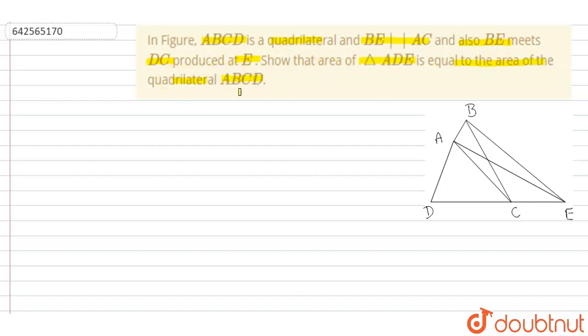So here question says in a figure ABCD is a quadrilateral, BE is parallel to AC and also BE meets DC produced at E. What we have to show is that area of triangle ADE is equal to the area of quadrilateral ABCD.